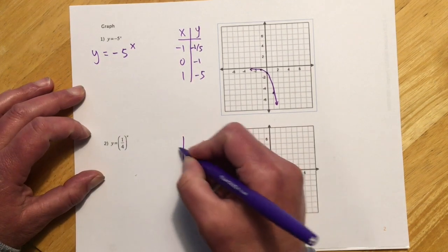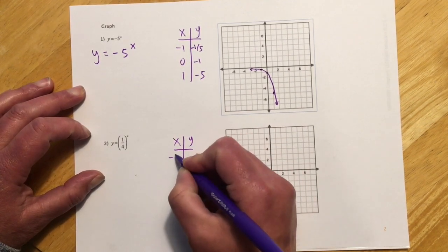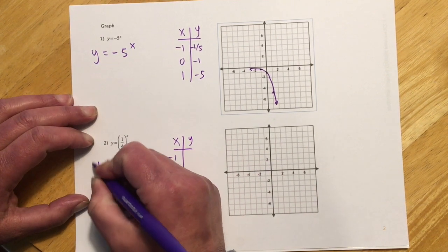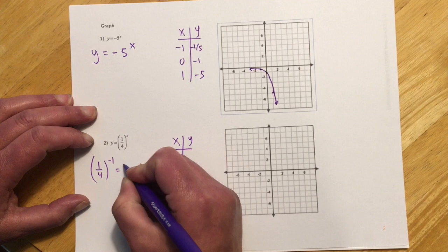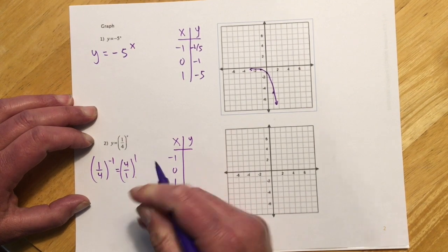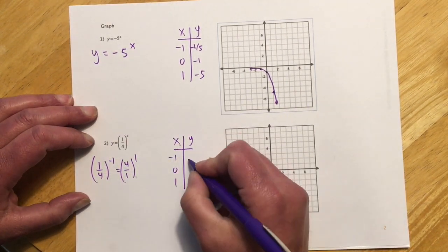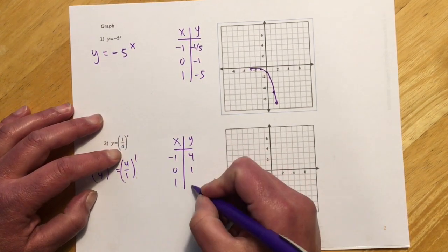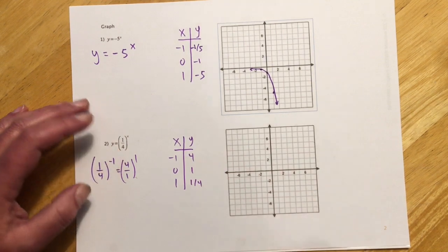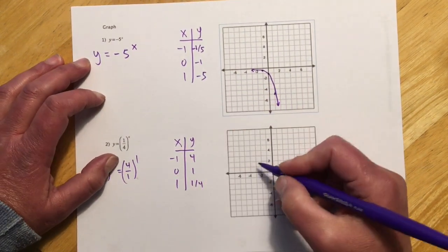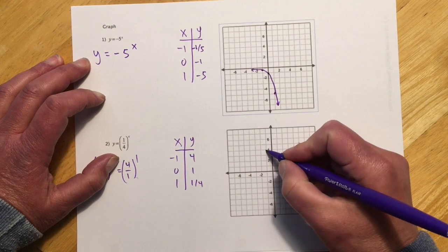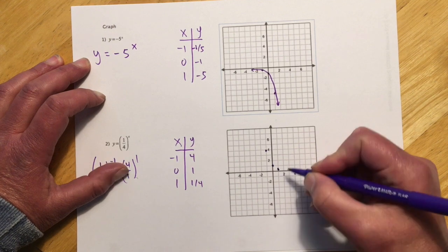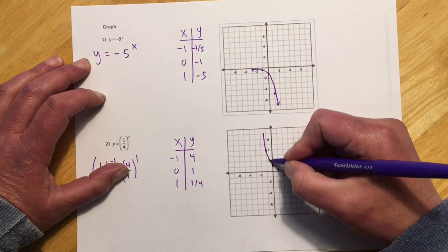This next one, x y, negative 1, 0, 1. 1 fourth to the negative 1 is the same thing as 4 over 1 to the positive 1 — remember we can flip it and change the sign — so that's 4. Anything to the 0 is 1. And then 1 fourth to the 1 would be 1 fourth. So this one is flipped kind of across the axis: when x is negative 1, y is 4; when x is 0, y is 1; when x is 1, y is 1 fourth.